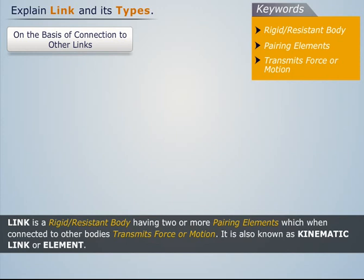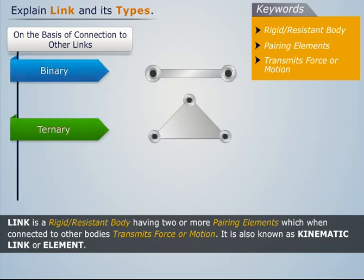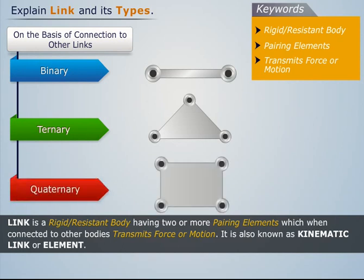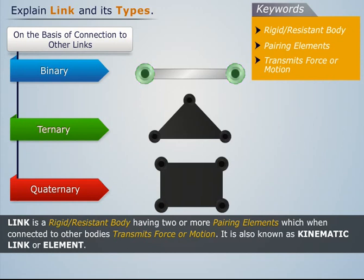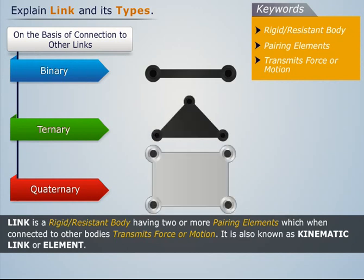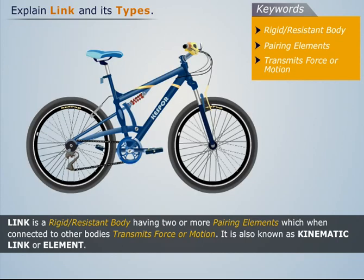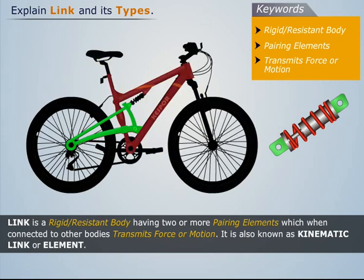On the basis of connection to other links, links are classified as binary link, ternary link, and quaternary link. A binary link has two pairing elements, a ternary link has three pairing elements, and a quaternary link has four pairing elements. For example, in the case of a bicycle, the link formed by connecting the suspension element from both ends to the rear frame element and main frame element is a binary link.